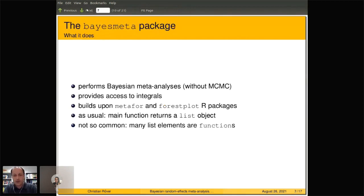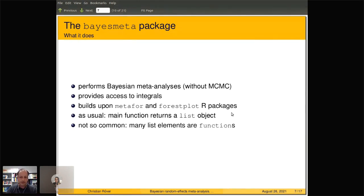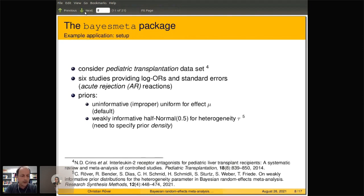The bayes meta package does Bayesian meta-analyses, performs all the integration for you, and provides access to all the integrals you may be interested in. It builds to some extent upon the metafor and cross-plot packages for pre-processing and illustrating the data. You perform the analysis and get back a list object — similar to lm() in R — but what's not quite so common is that a number of these list elements are also functions that give you access to the integrals.